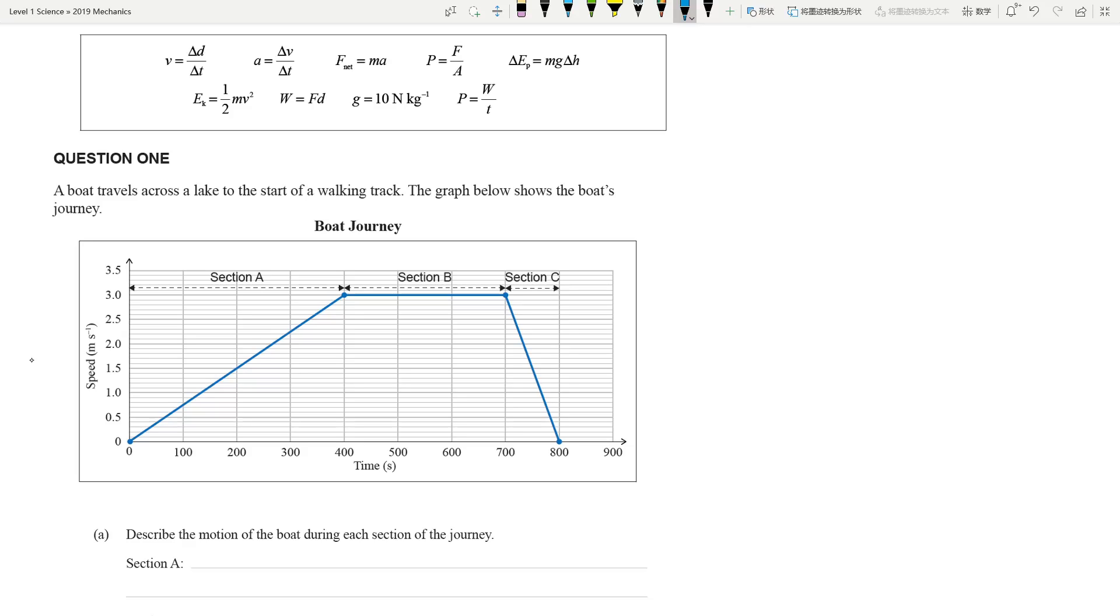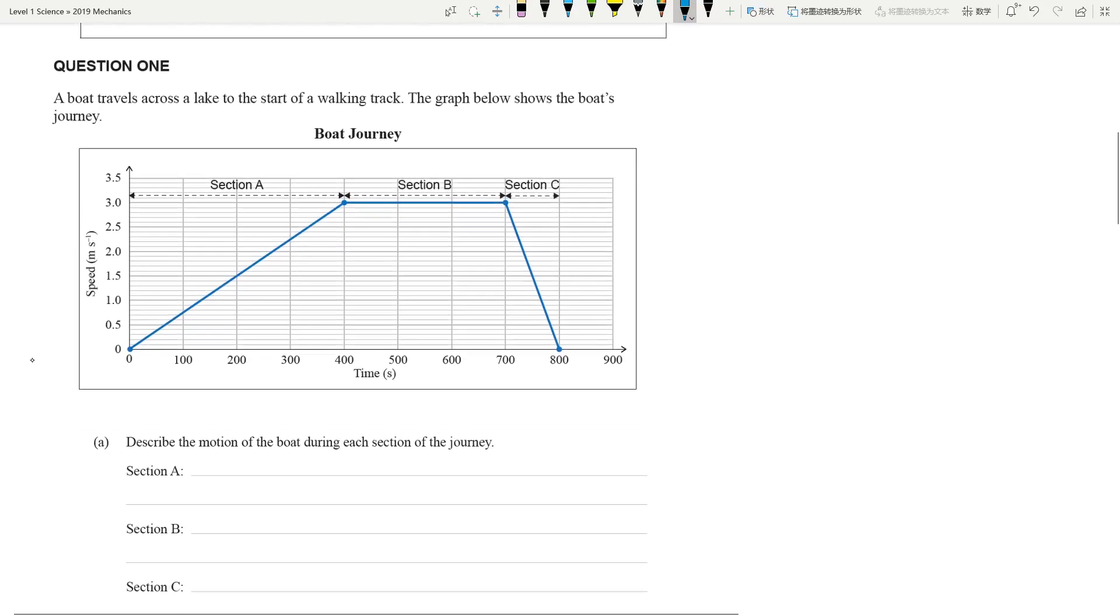Let's get started. Question one. This is a very typical paper looking at a speed-time graph. The question is looking at a boat travels across a lake to the start of a walking track. The most important thing when you see a graph like this, first thing first, you need to look at the axis label. So this is a speed-time graph.